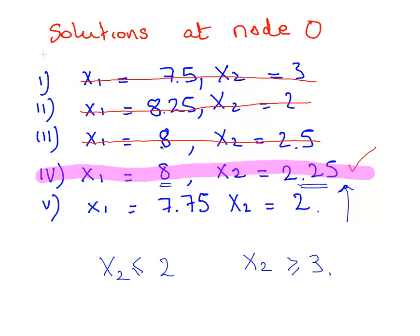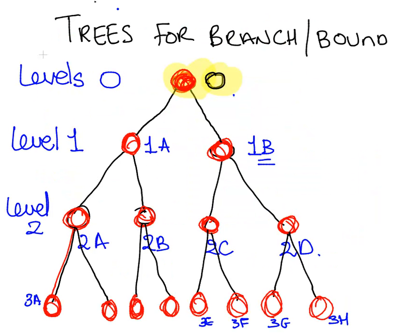So, what does that mean? Let's look at our tree, and this is the problem we've just sort of solved here. We had a look at this one here. This is the original problem, but now we're creating a branching, x2 less than or equal to 2, and x2 greater than or equal to 3. So, what we're going to do now is try out the solution at node 1a and 1b.